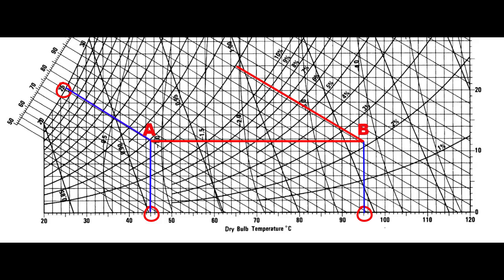So we have the wet bulb line and we follow that from B to C. Point C is identified by noting that the exit air from the dryer is at 65 degrees Celsius, so we follow the 65 degree dry bulb temperature line up to where it meets the wet bulb line at point C. B to C represents the conditions of air as it moves through the dryer.